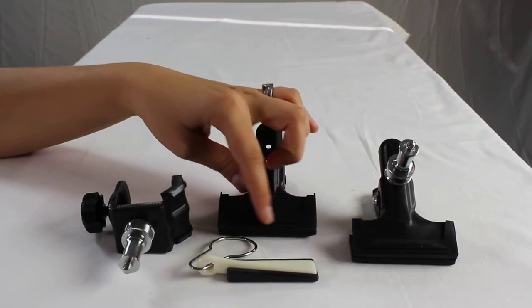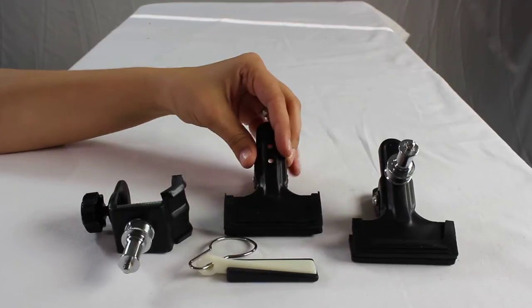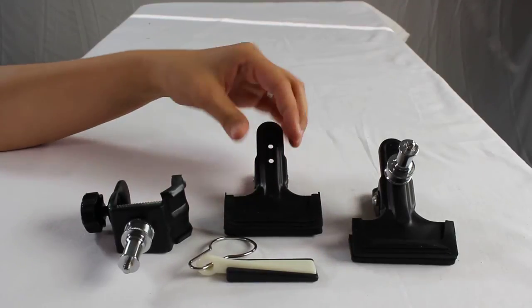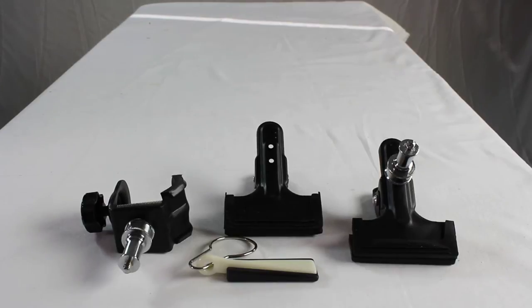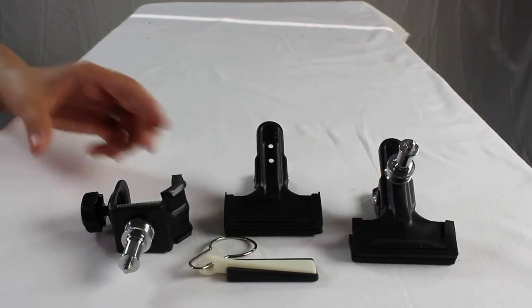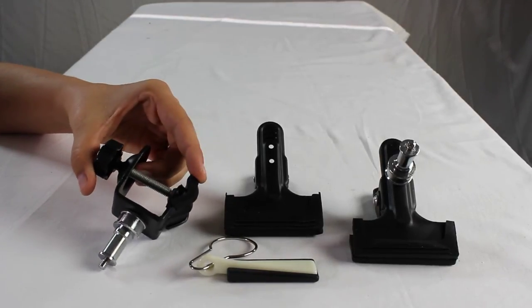They also have a rubber grip on the front that helps keep them securely in place as well as protect your backgrounds and stands when using them. Even some of our other clamps do have the protective rubber.